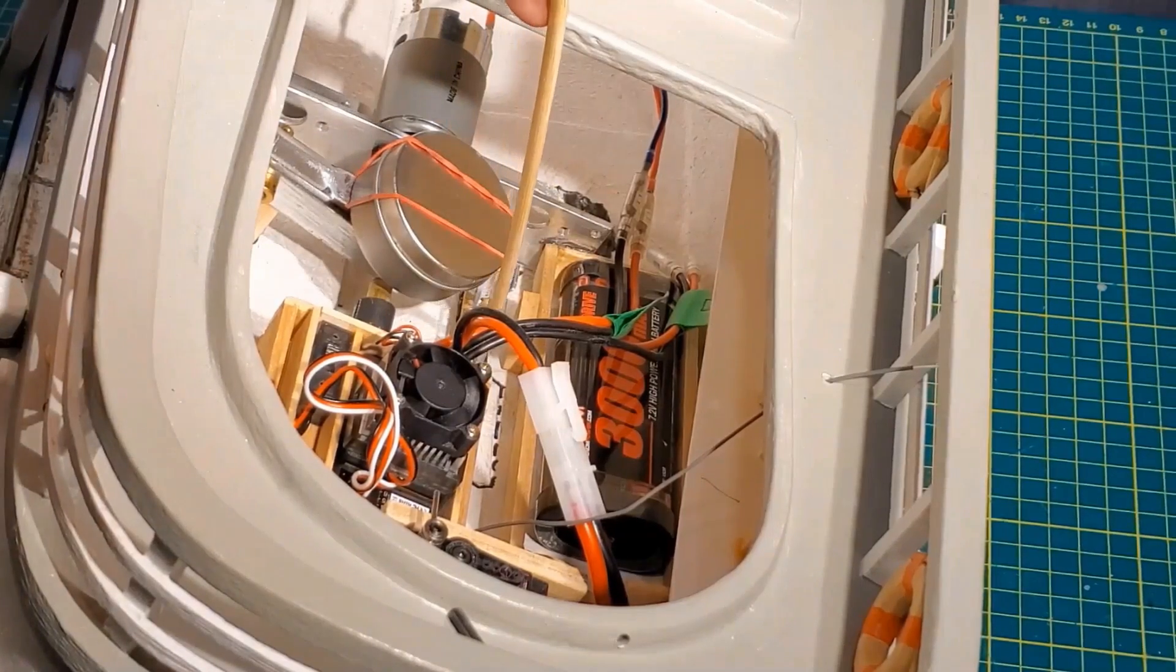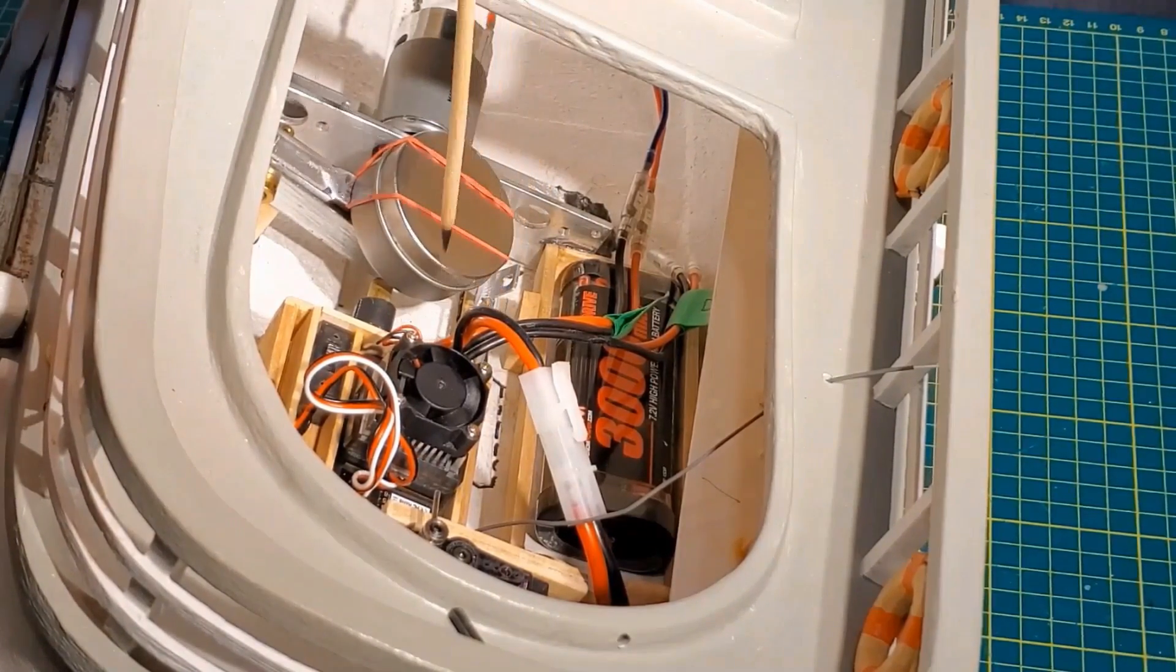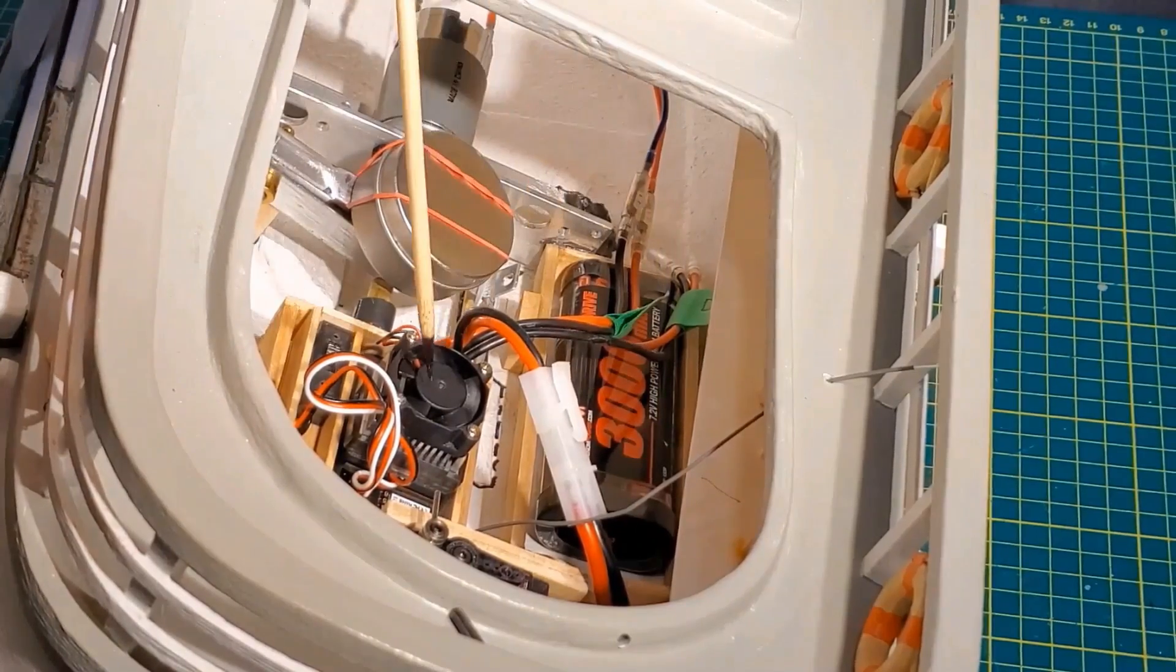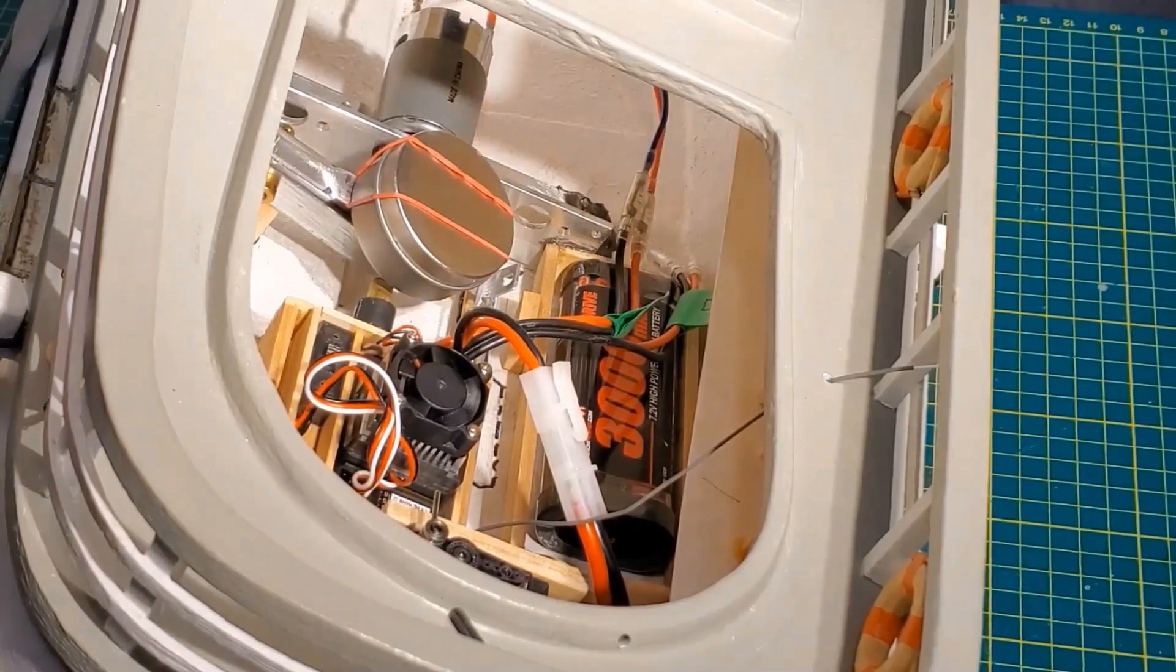And now I've connected the elastic band through the screw eyes. The one on the lid, I've got a battery. The ESC is installed and everything's ready to go.